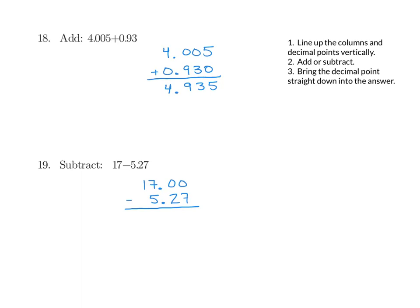We are subtracting, which means that we want to borrow. So I'm going to borrow from the 7 and make it a 6, which makes my first 0 a 10. I borrow from the 10, it becomes a 9, which makes my last 0 a 10. Now, if we go ahead and subtract, we get 10 minus 7 is 3. 9 minus 2 is 7. 6 minus 5 is 1. And we bring down our last 1. We bring down our decimal point and we get 11.73.